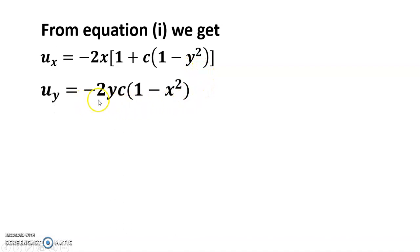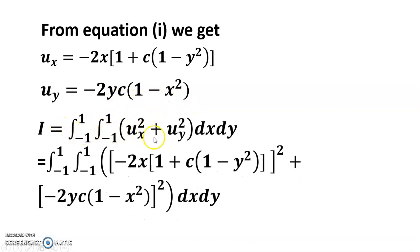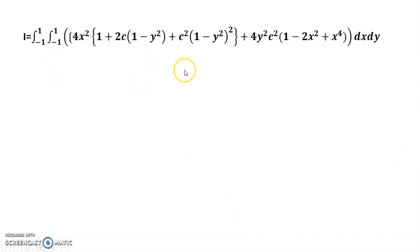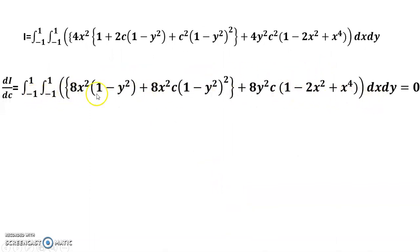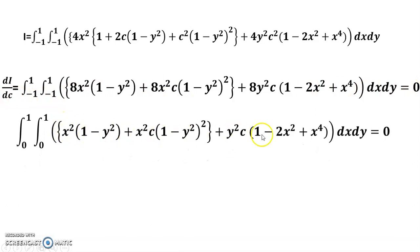I am putting the values of ux and uy in here and I am getting this value. dI/dc equals zero. This is a functional problem, so dI/dc = 0, and this value equals zero.